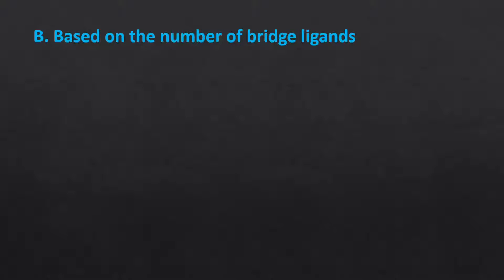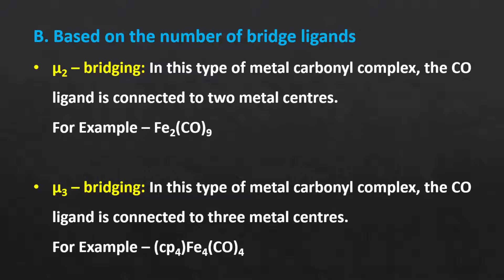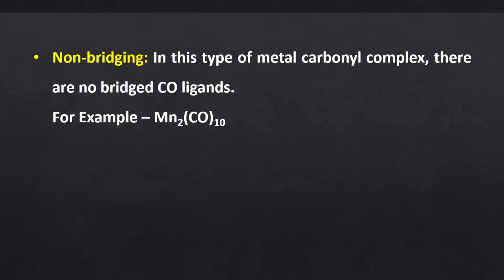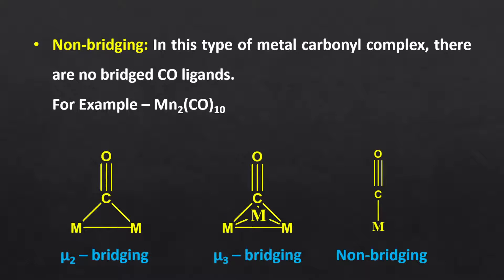Based on the bridge ligand, we can classify polynuclear metal carbonyl complexes into: mu-bridging, where the carbonyl ligand is connected to two metal centers — for example, diiron nonacarbonyl complex; mu3-bridging, where the carbonyl ligand is connected to three metal centers — for example, carbonyl cyclopentadienyl iron tetrahedral cluster; and non-bridging or terminal carbonyl, where there are no bridging carbonyl ligands, only terminal carbonyl ligands — for example, dimanganese decacarbonyl. The schematic diagram shows the bonding involved in polynuclear metal carbonyl complexes.